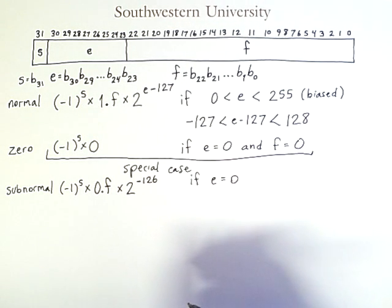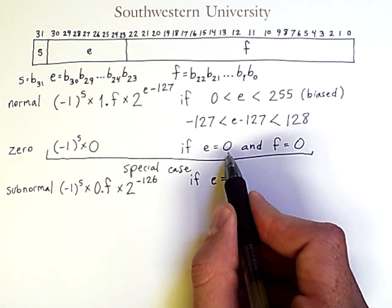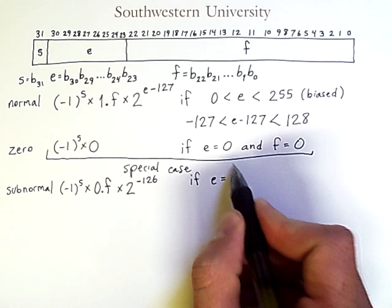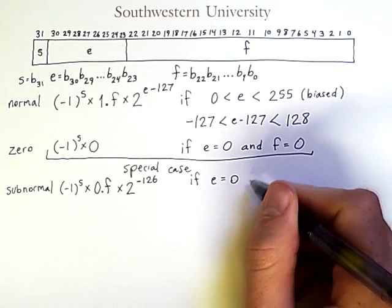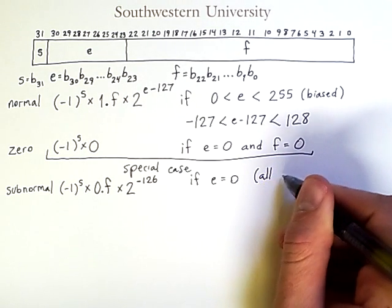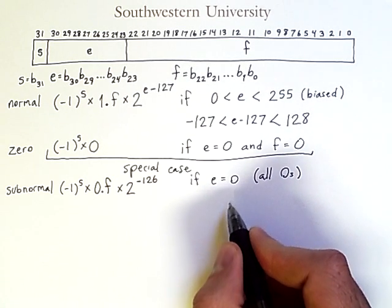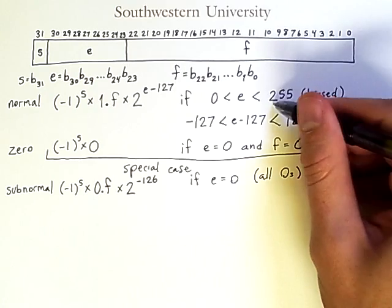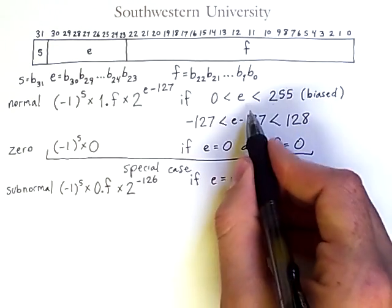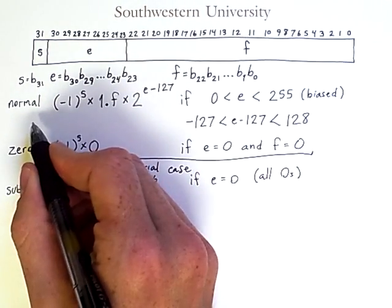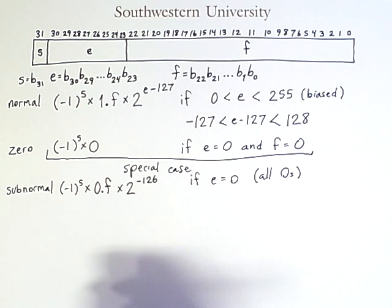That still leaves us with some more possibilities. We know what happens if all of the bits in the exponent are zeros. But what if all of the bits in the exponents are ones? That would correspond to a value of 255, which we have excluded from our normal representation. These special cases are reserved for two possibilities.